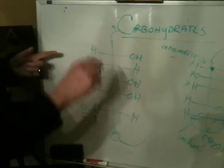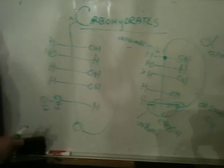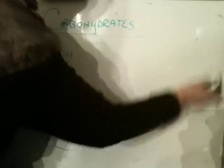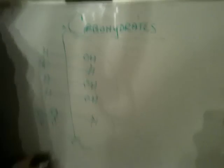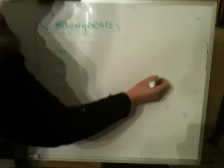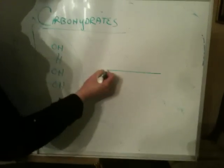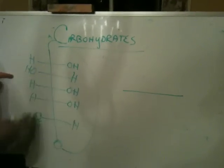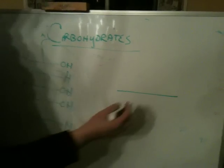The next step is to tip the sugar over on its side. How do you know it's a sugar? When I started, it was a polyhydroxy carbonyl compound, and that's what sugars are. So I'm flipping this over on its side, and now everything that's on the right ends up on the bottom, and everything on the left ends up on the top.